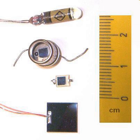Photodiodes are similar to regular semiconductor diodes except that they may be either exposed or packaged with a window or optical fiber connection to allow light to reach the sensitive part of the device. Many diodes designed for use specially as a photodiode use a pin junction rather than a PN junction, to increase the speed of response.